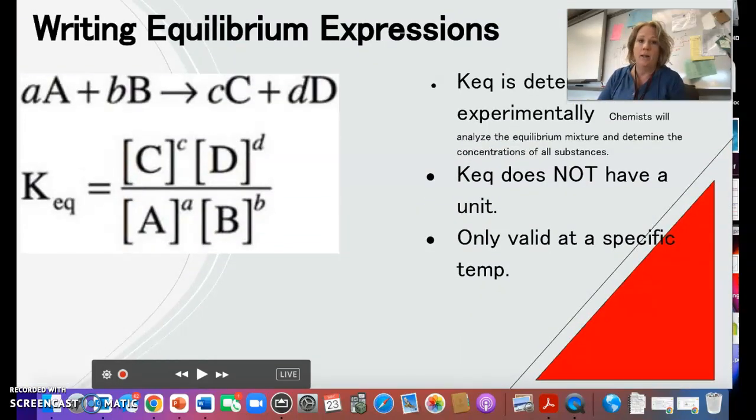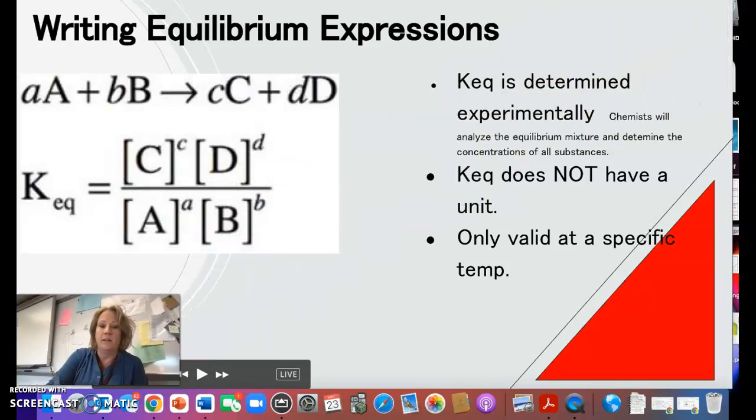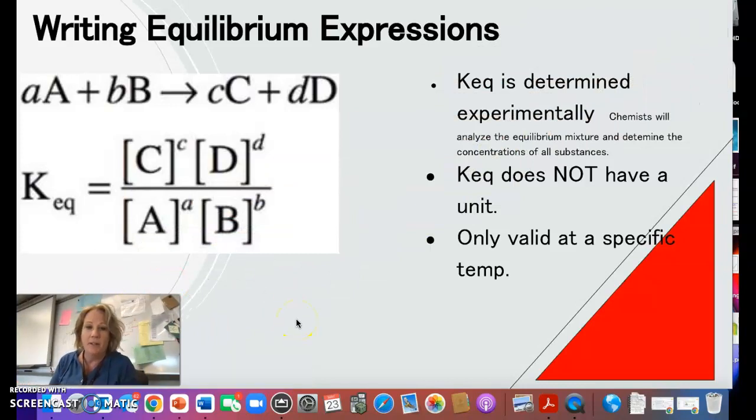In chemical reactions, we are going to be interested in calculating something called a KEQ constant, an equilibrium constant. So when we do calculate KEQ, it is something that is experimentally determined. So you'll have the concentrations of the substances given to you in the question. You can mathematically calculate it, but it's really that those values were obtained through experimentation. It doesn't have a unit and it's only valid at a specific temperature. Remember, the brackets mean concentration, in this case, molarity.